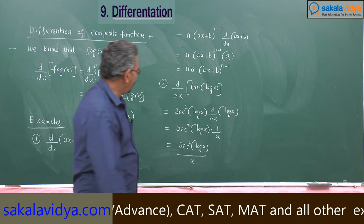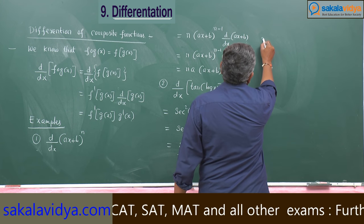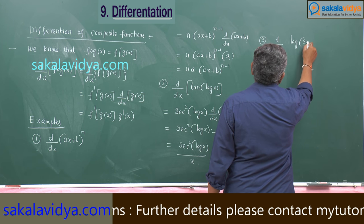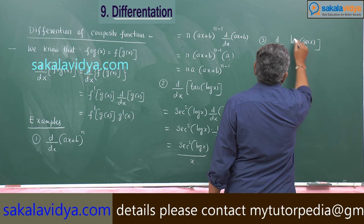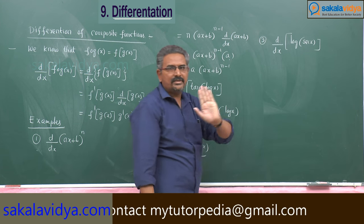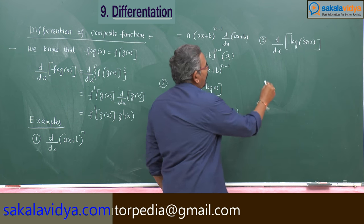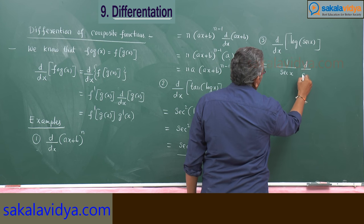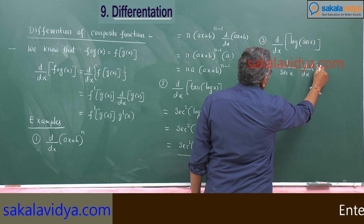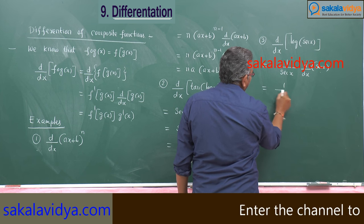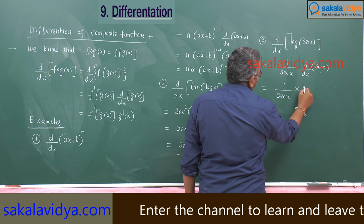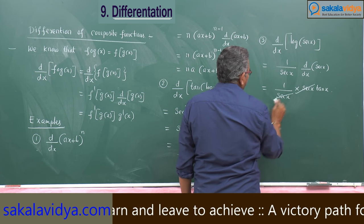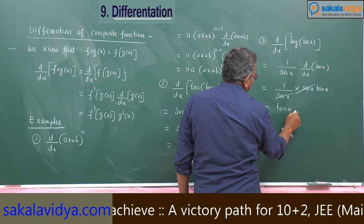One more example: d/dx of log(sec x). First, the derivative of log is 1 over the argument, and then multiply by the derivative of sec x. So we get 1/sec(x) into d/dx of sec(x). The derivative of sec(x) is sec(x)·tan(x). So we get (1/sec x)·sec(x)·tan(x). The sec x cancels, leaving tan x.